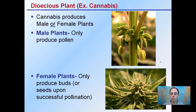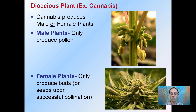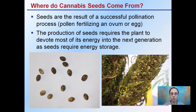A dioecious plant — for example, cannabis — produces male or female plants, not both. The male plants only produce pollen, and the female plants only produce buds or seeds upon successful pollination.